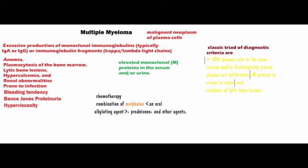There is also a bleeding tendency. The patient manifests with bleeding disorders because platelets get coated by these monoclonal proteins, which impairs the normal aggregation of platelets. These are some of the clinical features of multiple myeloma.